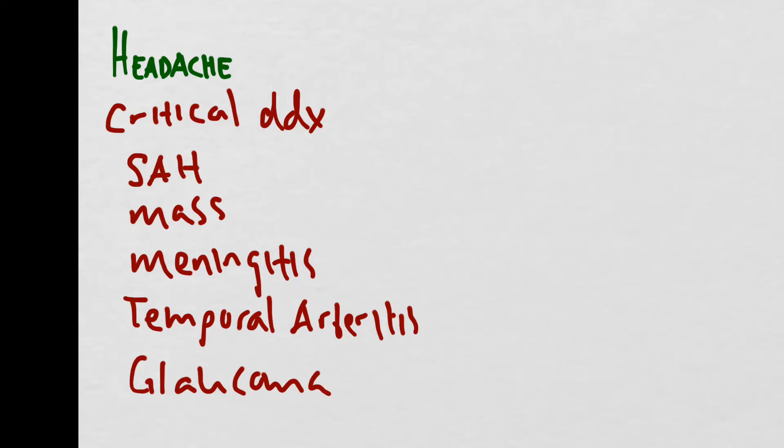So let's go over how each of these diagnoses present. For subarachnoid hemorrhage, the patient will present with sudden onset headache and the headache will be the worst headache of his or her life.